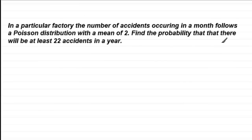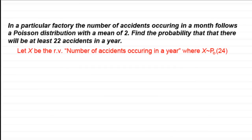Now first of all, if I was doing a question like this, I'd want to define a random variable. I'm going to say that X be that random variable which represents the number of accidents occurring in a year, where X is distributed as a Poisson distribution with a mean of 24. I get 24 because if there's a mean rate of 2 accidents per month, then over a year of 12 months, there's going to be 2 times 12, which is 24 accidents.